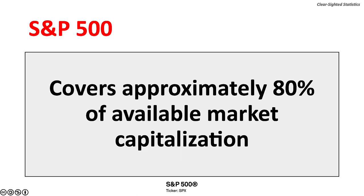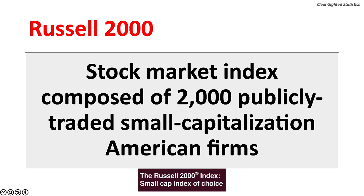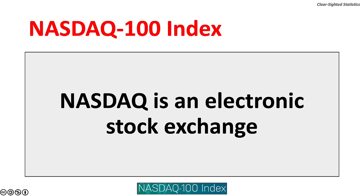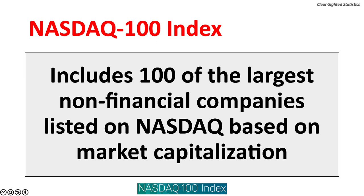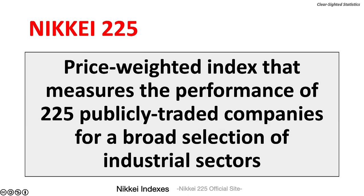The S&P 500 covers approximately 80% of available market capitalization. The Russell 2000 is published by FTSE Russell, a subsidiary of the London Stock Exchange, and is a stock market index composed of 2,000 publicly traded small capitalization American firms. The NASDAQ 100 index is published by the National Association of Security Dealers and includes 100 non-financial companies listed on the NASDAQ electronic stock exchange based on market capitalization. The Nikkei 225 is the stock market index for the Tokyo Stock Exchange, a price-weighted index measuring the performance of 225 publicly traded companies across a broad selection of industry sectors.